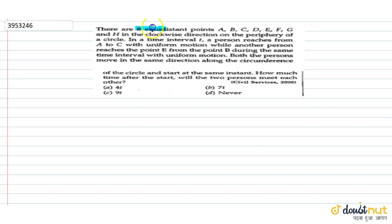The question given is there are 8 equidistant points A, B, C, D, E, F, G and H in the clockwise direction on the periphery of a circle.